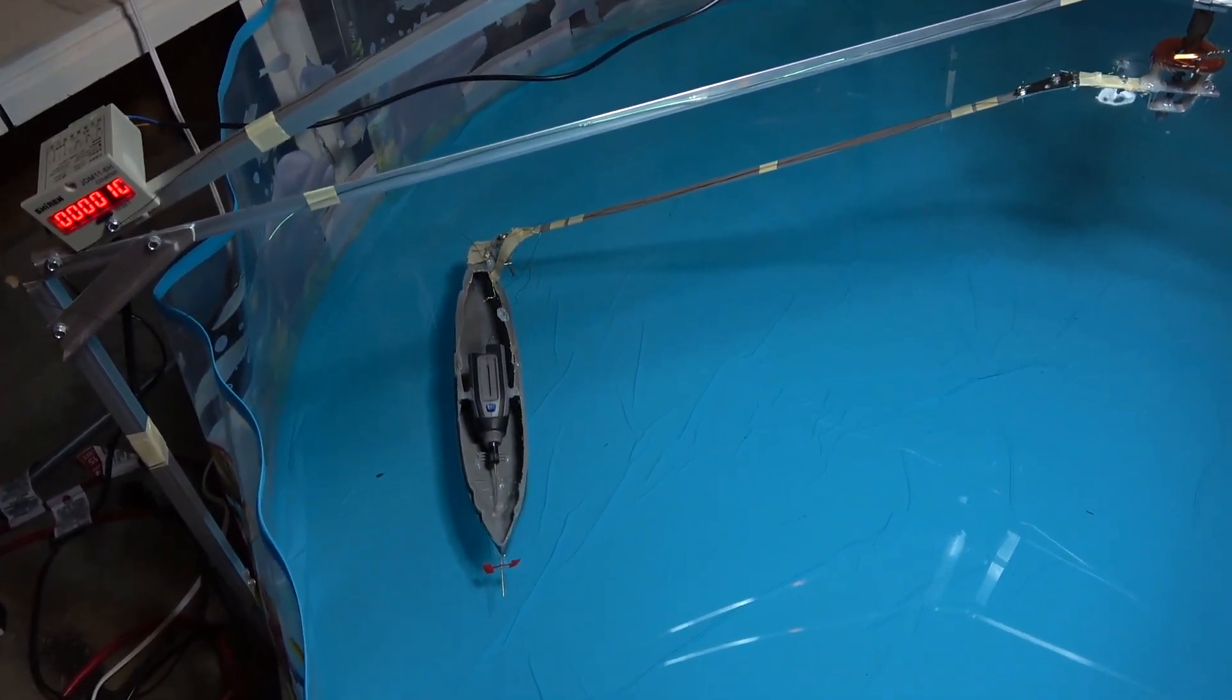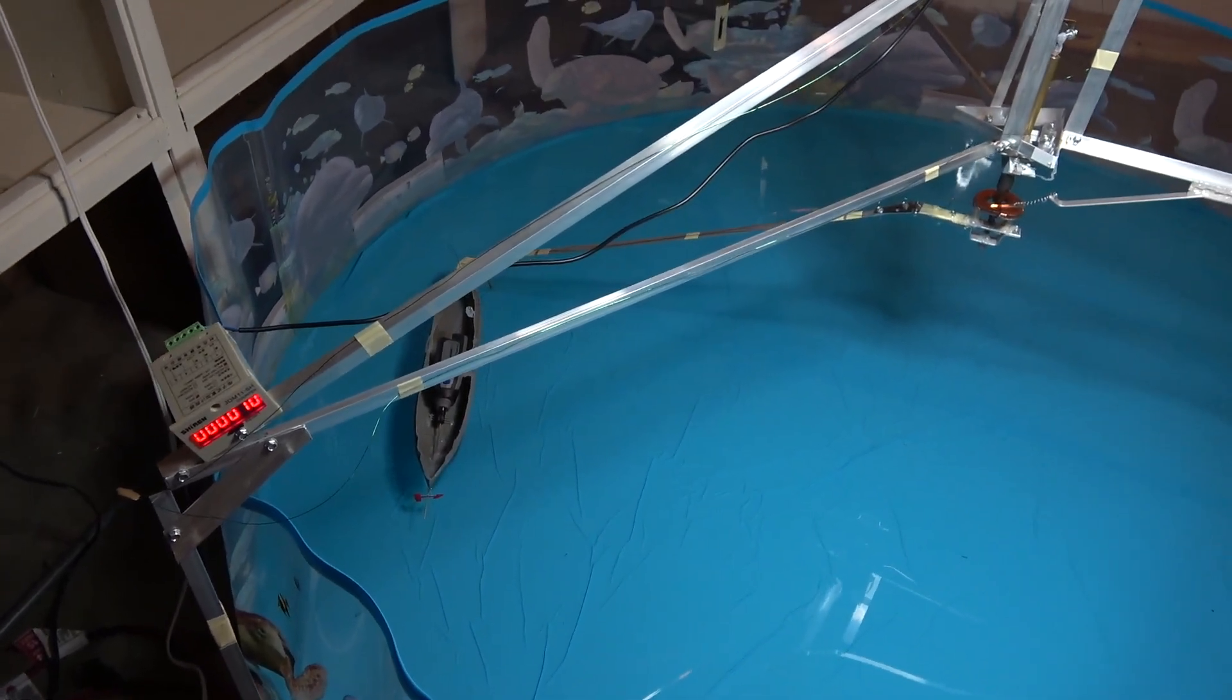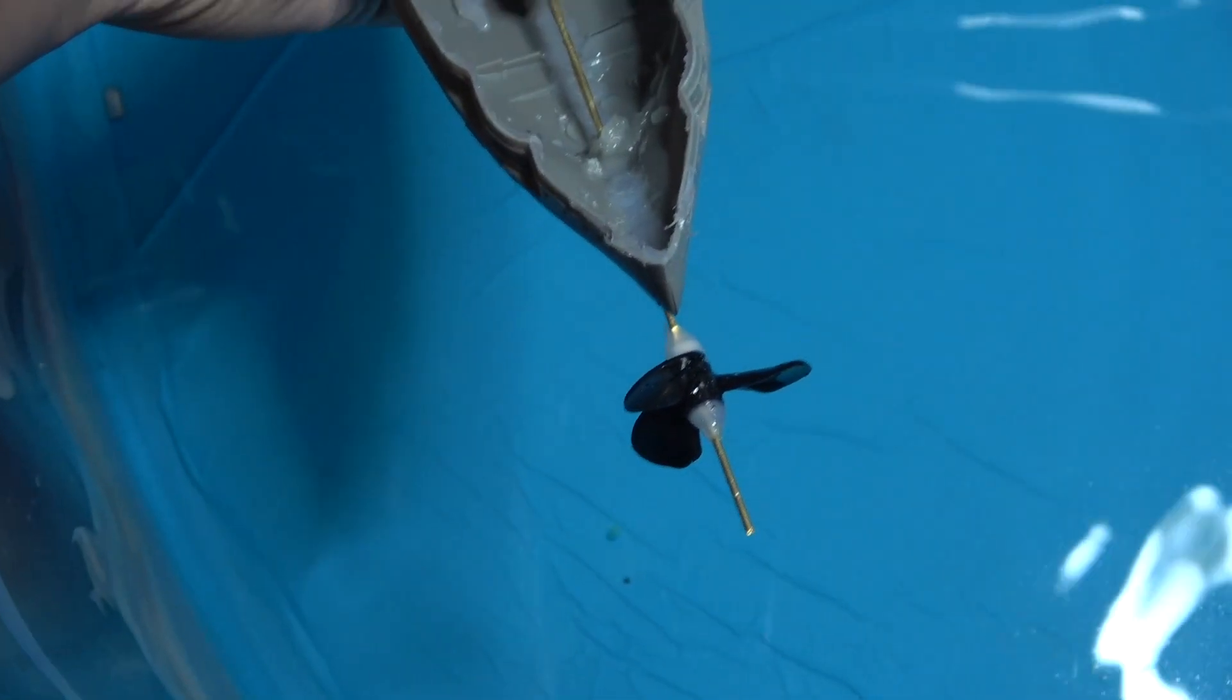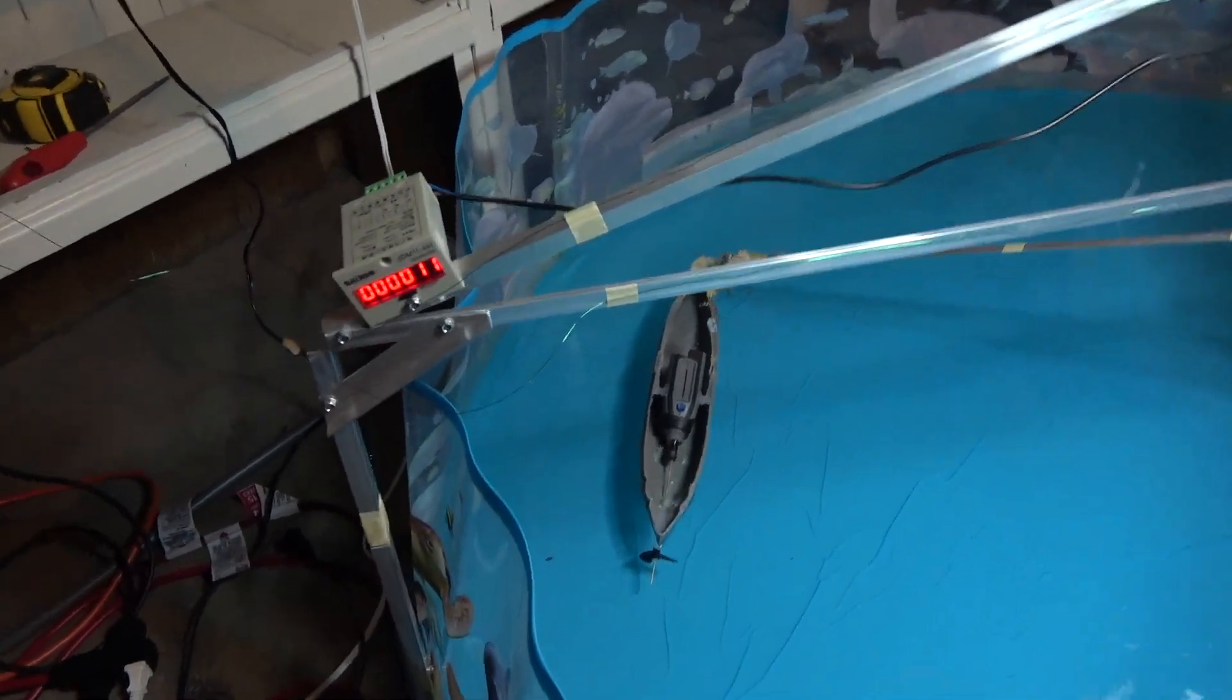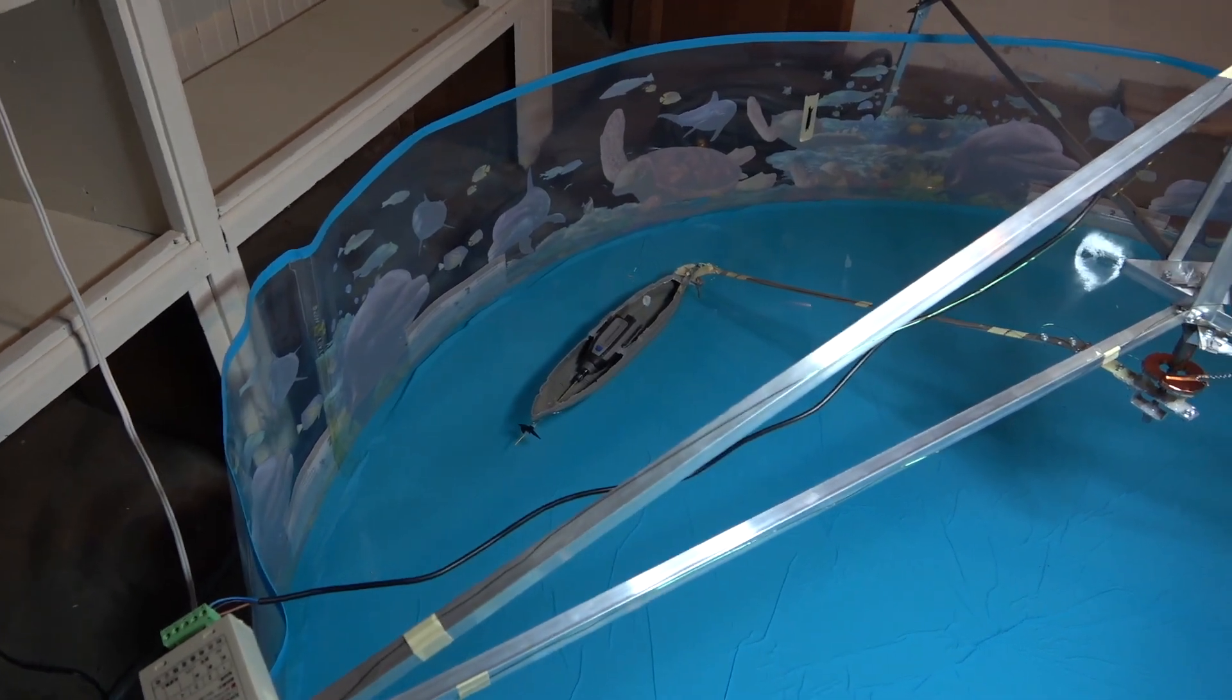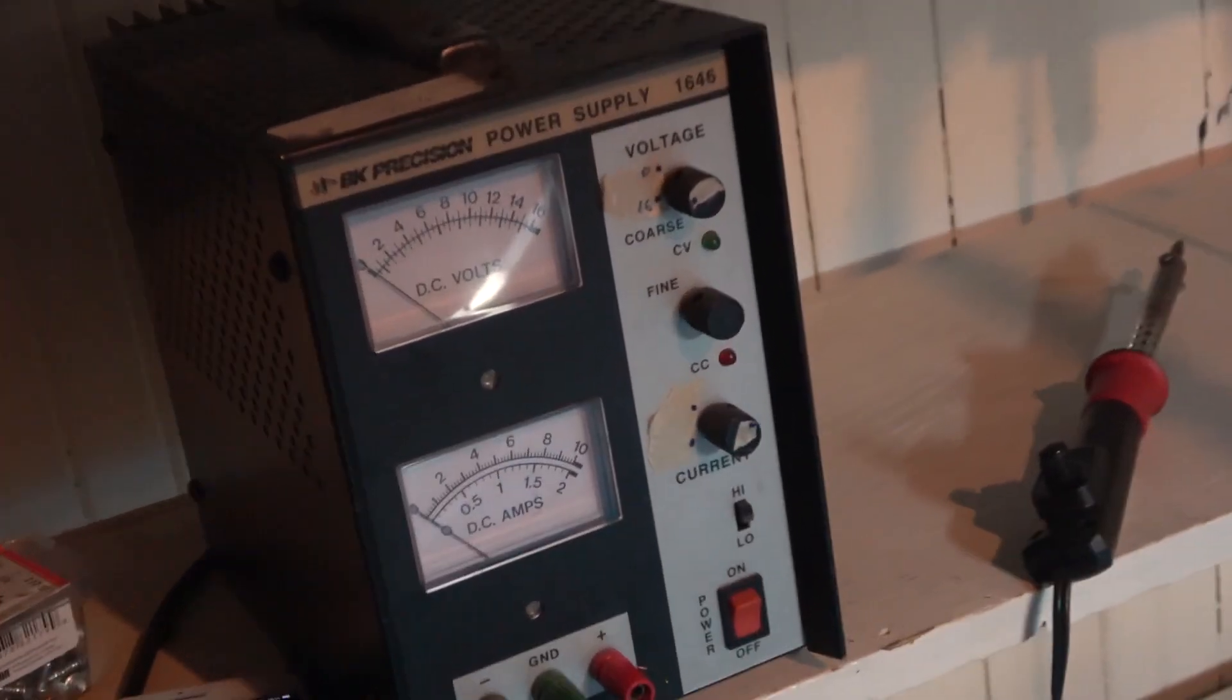I'll show you the conventional screw propeller just so you can see the comparison. Okay so here you can see the boat with conventional propeller and yeah I'll show you here. Like before I'm gonna run it for one minute and then we can compare how many rotations it did in one minute and it's being run at the exact same settings of voltage and amperage.